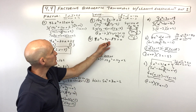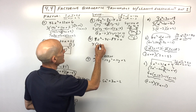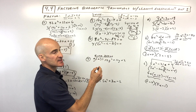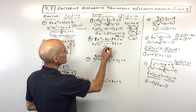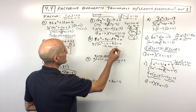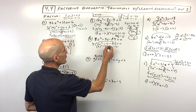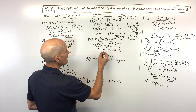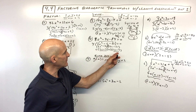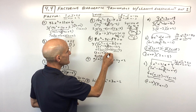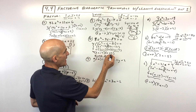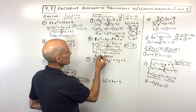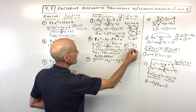Number 6: greatest common factor looks like 4, so factoring out 4 gives 2c squared minus c minus 21. What multiplies to negative 42 but adds to negative 1? That's negative 7c and positive 6c. Bring down negative 21 and 2c squared. Factor by grouping: c out of the first group, 3 out of the second — both leave 2c minus 7. Factoring 2c minus 7 out gives 2c minus 7 times c plus 3, and bring down the 4. Setting c plus 3 equal to zero gives c equals negative 3. Setting 2c minus 7 equal to zero gives c equals 7 halves, or 3.5.